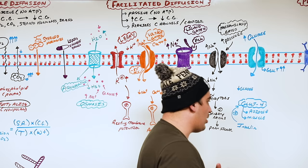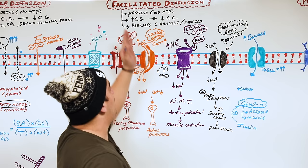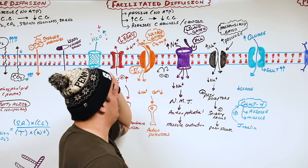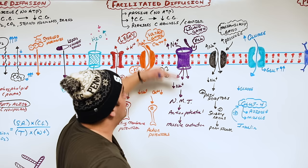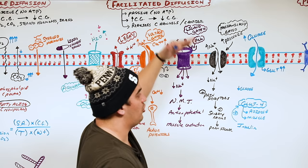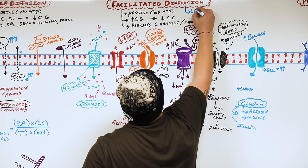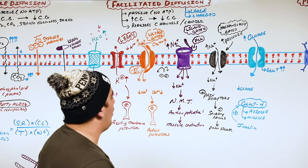To summarize facilitated diffusion: it's a passive process, usually requiring no ATP directly. Things move from high to low concentration, but large or charged molecules need a specific protein channel or carrier to cross the cell membrane. Facilitated diffusion is for large and charged molecules, whereas simple diffusion is for small and noncharged molecules.